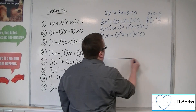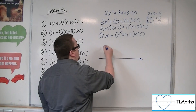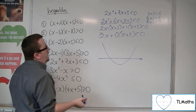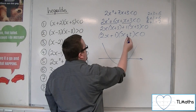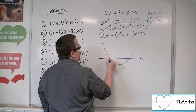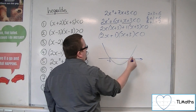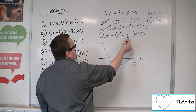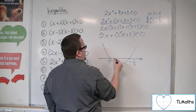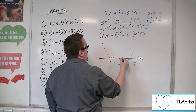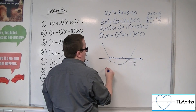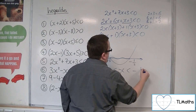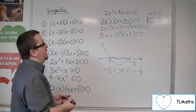So this is a quadratic I need to sketch with a positive x² term, crossing at −3 and −1/2. Where is the parabola below the x-axis? It's below it there. So: −3 < x < −1/2.